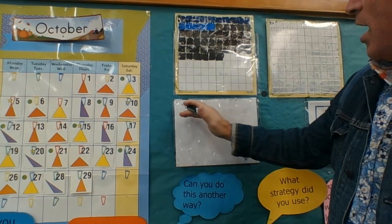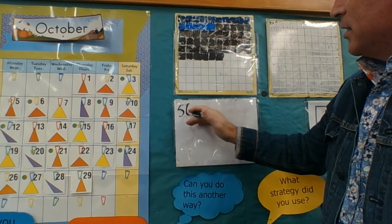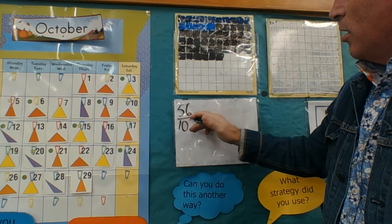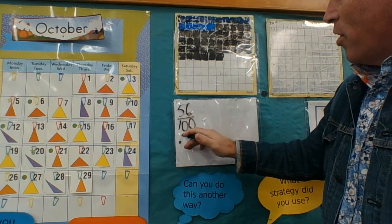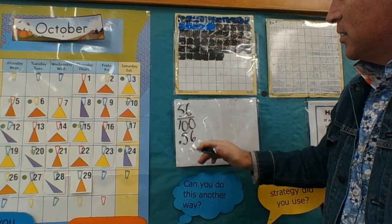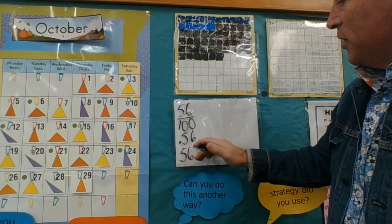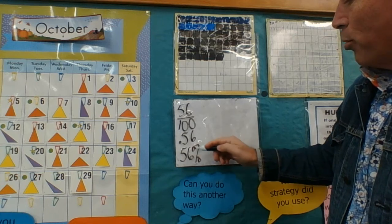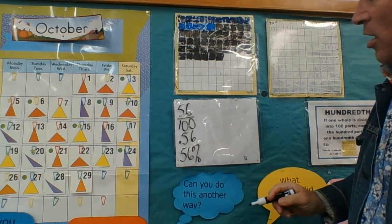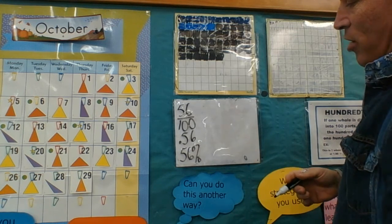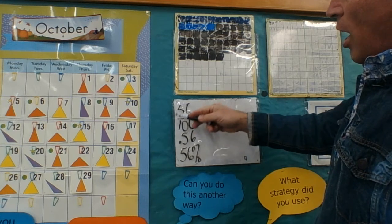And now for our application, we have 56 out of 100. I'll write it like I did for our daily ticker: 56 hundredths. And we also know that that is also 56 percent, because 'per' means out of and 'cent' means 100, just like we have 100 cents in our dollar.